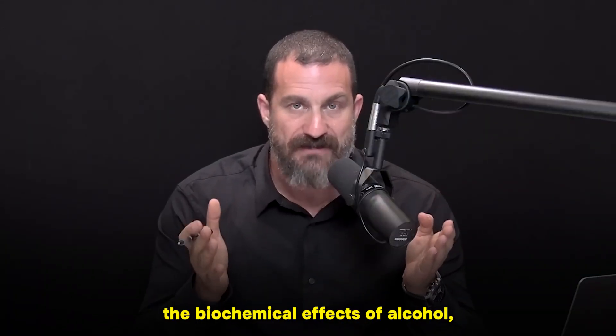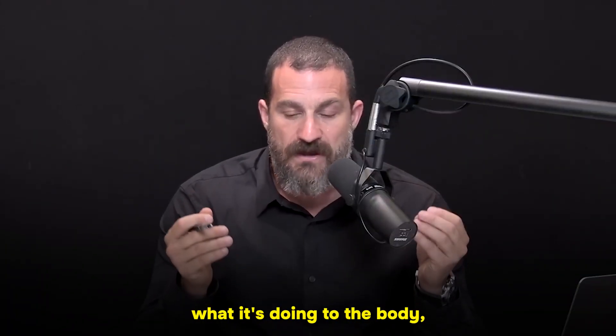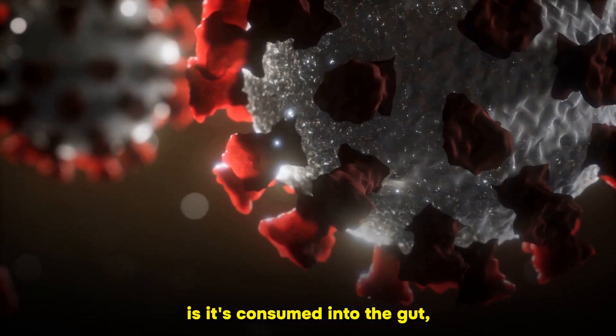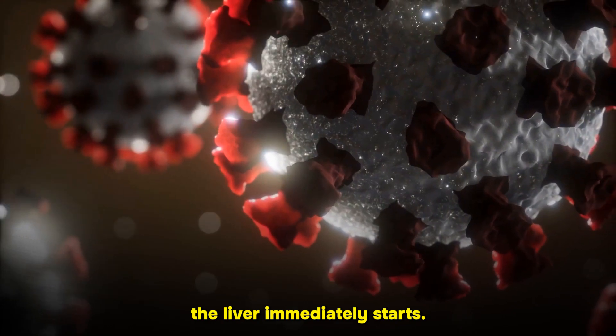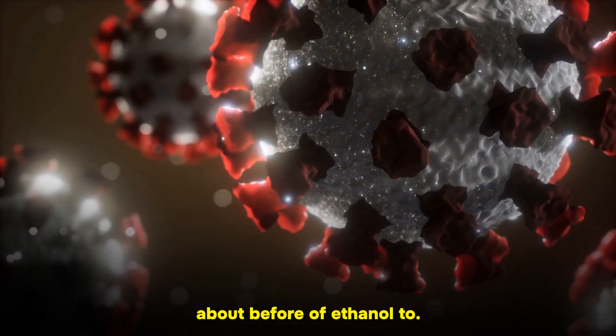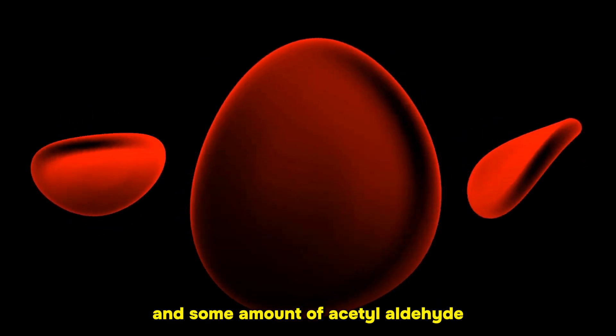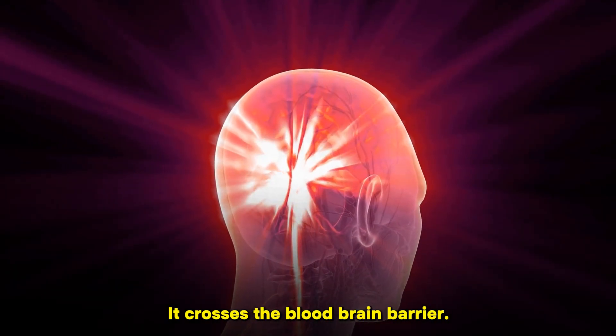In thinking about the biochemical effects of alcohol and what it's doing to the body, it's consumed into the gut, goes into the stomach. The liver immediately starts conversion of ethanol to acetaldehyde to acetate, and some amount is making it into the brain, crossing the blood-brain barrier.